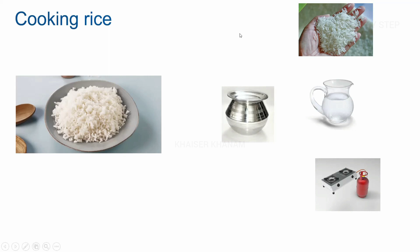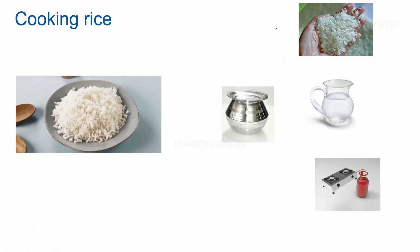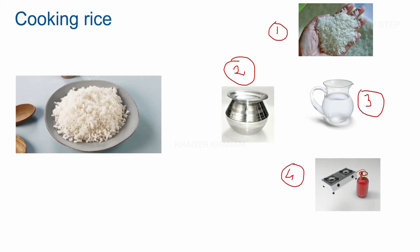So now what is my first state? My first state is this raw rice. I will just open this. This is my first state and inside that I will be putting water. Before that I will just put it inside the cooking pot. Then I will put water and finally I will just place that pot on the stove and the rice will be cooked and I will be getting this result.